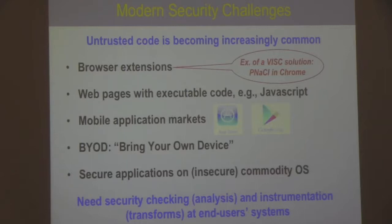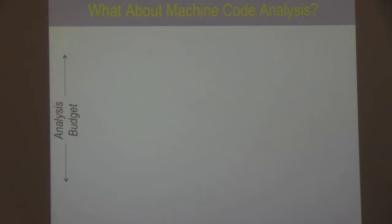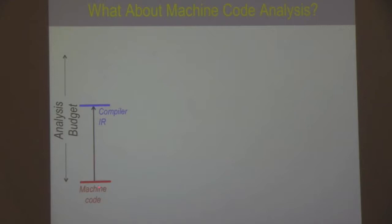A question you might ask is: there's been a lot of research over the last three or four decades on improving analysis and transformation of machine code — wouldn't that be good enough? The short answer is no. In every real-world situation you have a finite analysis budget — time, memory, battery power — and if you're starting with machine code you'll spend a significant part of that budget just lifting the code up to some approximation of what a compiler IR might give you: control flow, distinguishing code from data, type information. These are quite difficult to extract from machine code.